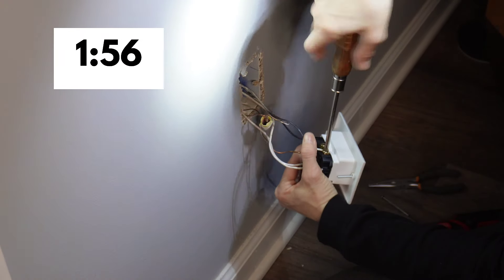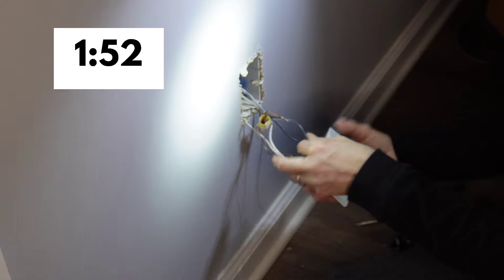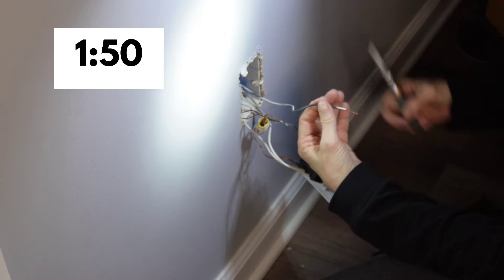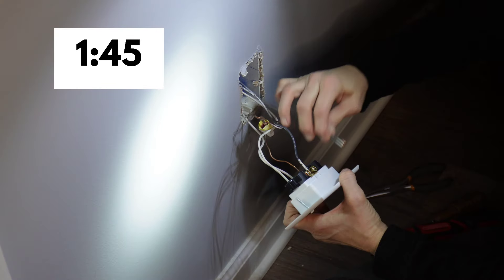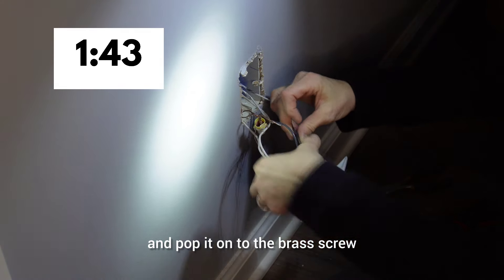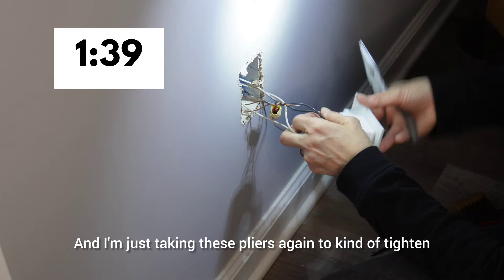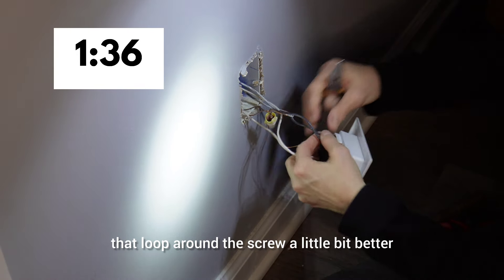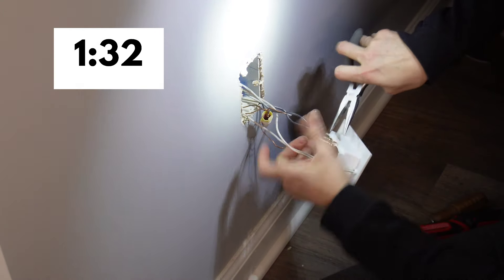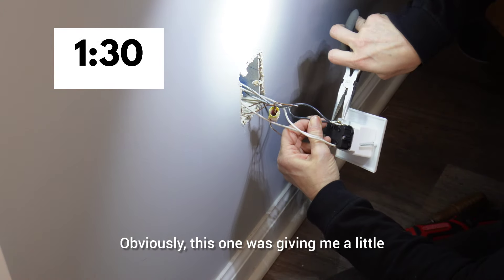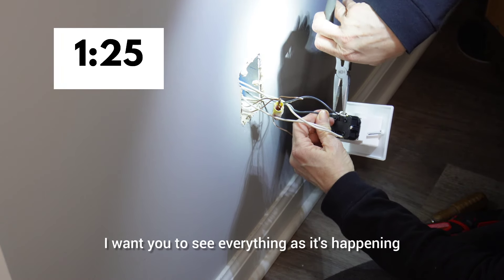As soon as you turn the power back on, use your little receptacle tester, it's going to tell you that it's wrong and you'll be able to go and reverse it. So the last one here, let's make that loop and pop it onto the brass screw. And I'm just taking these pliers again to kind of tighten that loop around the screw a little bit better because it was a little wide. Obviously this one was giving me a little bit of a challenge. Normally I would edit that out, but again, I want you to see everything as it's happening.